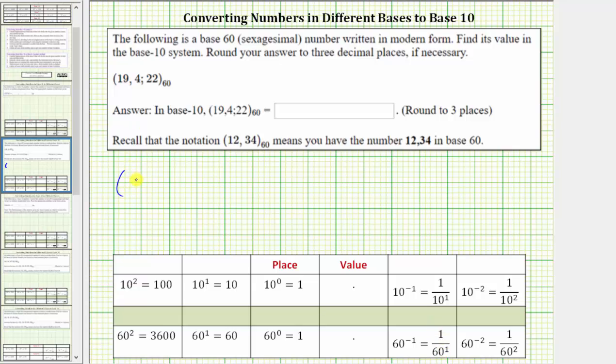So beginning with the given number in base 60, let's record the place values above the whole numbers. Again, the 19 is in the 60 raised to the power of one or 60's place value. The 4 is in the 60 raised to the power of zero or one's place value. And the 22 is in the 60 raised to the power of negative one or one-sixtieth place value.